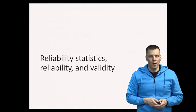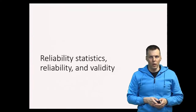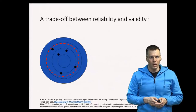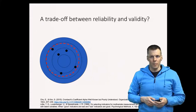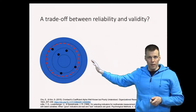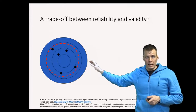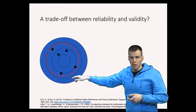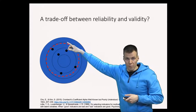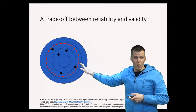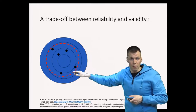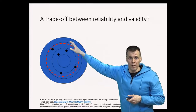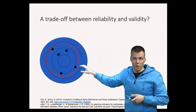Validity and reliability statistics are related in important ways that you need to understand when you evaluate measurement scales. Let's take a look at this target practice example again — this is the example of valid but unreliable measurement. Reliability quantifies how much the hits on the target are spread around. This is quite unreliable because there is a lot of dispersion, a lot of spread in these hits on the target.